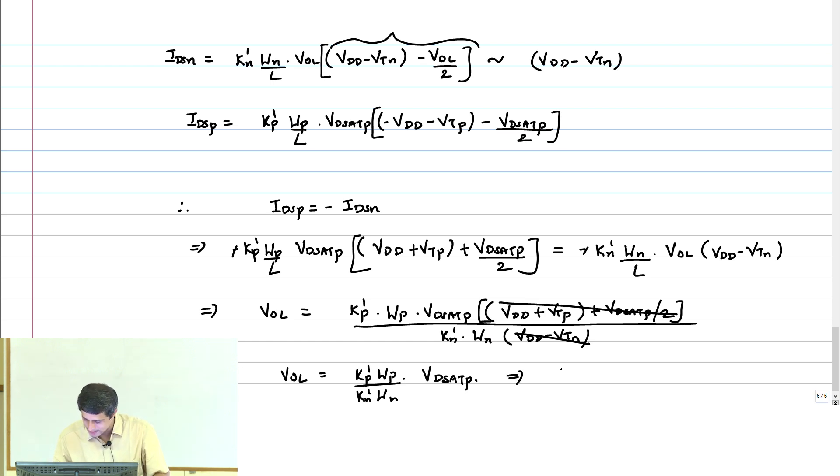What does this say? It says that WP by WN equals VOL times KN prime by KP prime times VDSATP. So if your VOL goes up then WP has to go up, that is what this equation says. WP by WN is proportional to VOL. So VOL has to come down, then WP by WN has to come down.